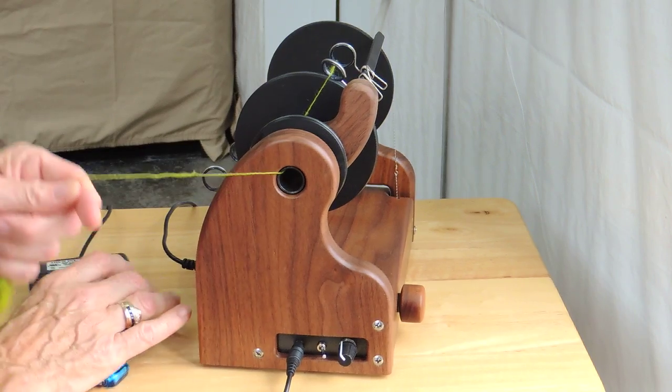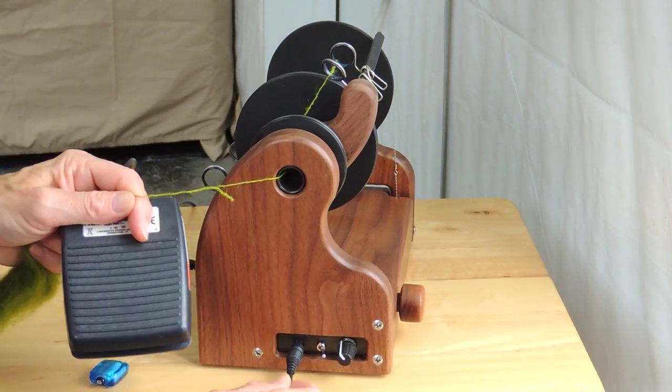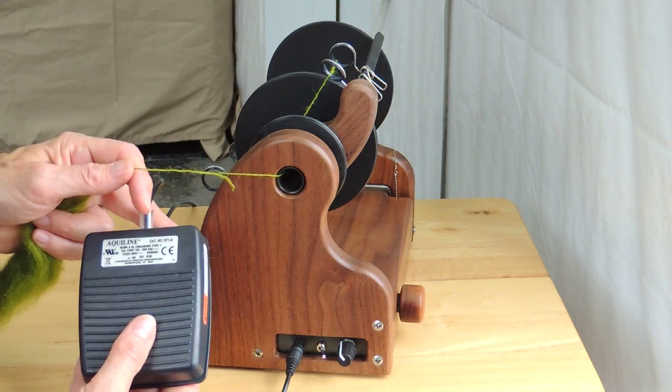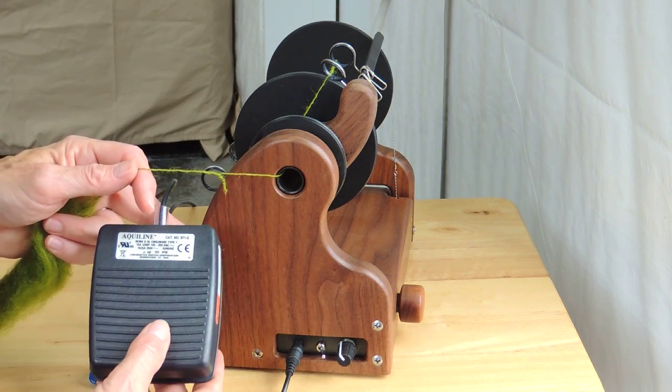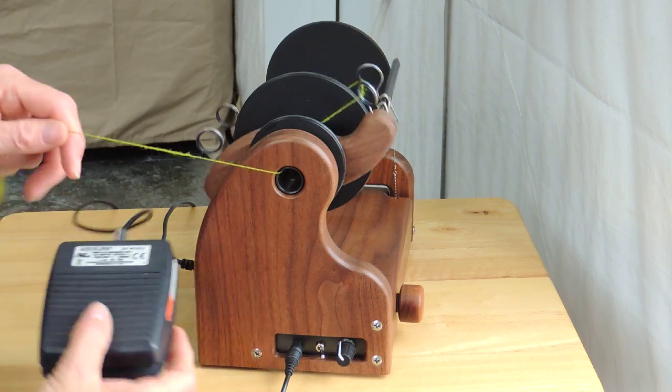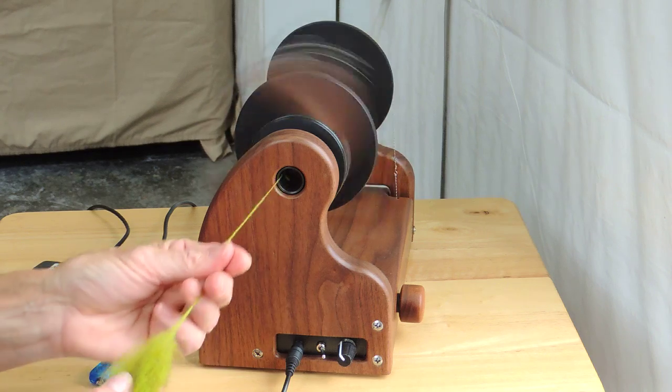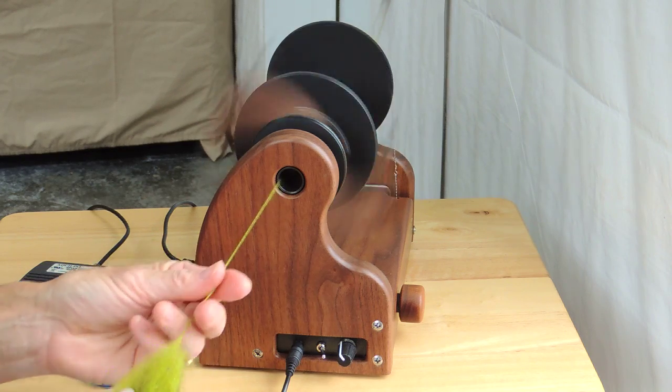The foot switch is plugged in right here and this is what the foot switch looks like. I'm using it right now as a hand control in tap on tap off. So when I give it a tap it slowly starts up and off I go to spin.